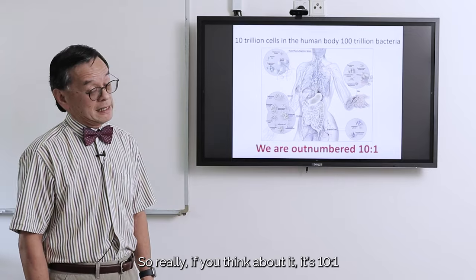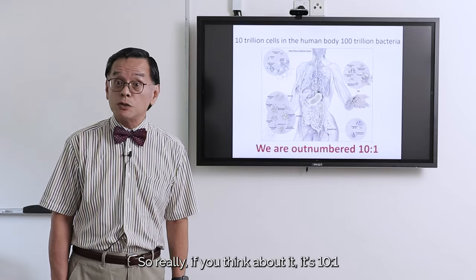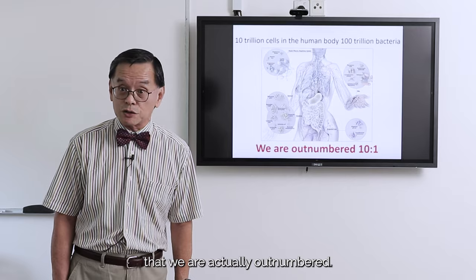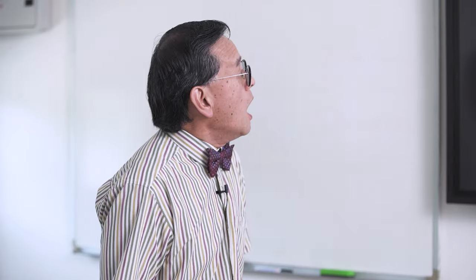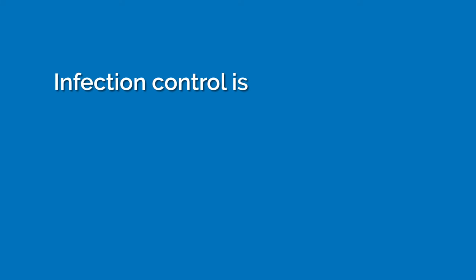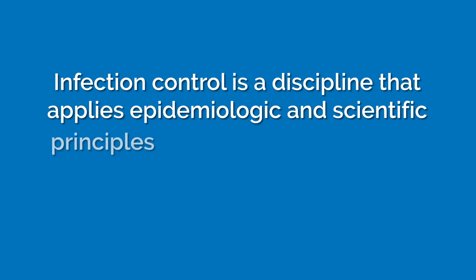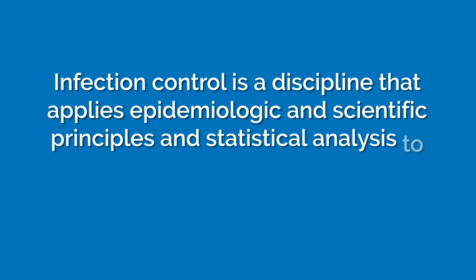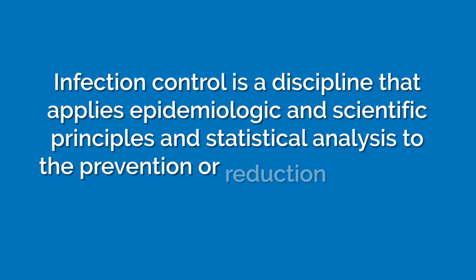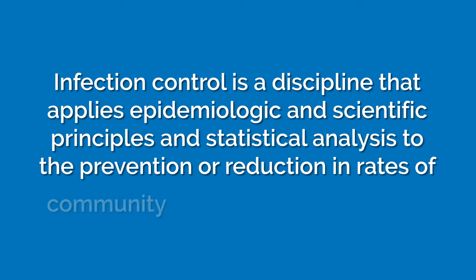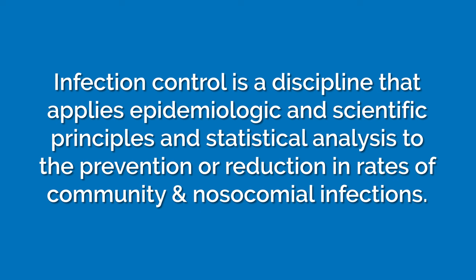So really, if you think about it, it's 10 to 1 that we are actually outnumbered. What is infection control? Let's have a bit of a definition here. The definition is that it's a discipline that applies epidemiological and scientific principles and statistical principles as well, and analysis to the prevention and reduction in the rates of community and nosocomial infection.